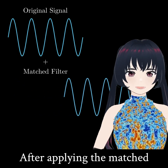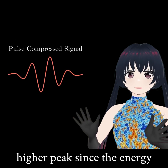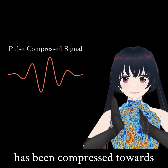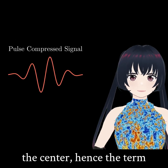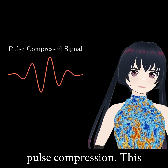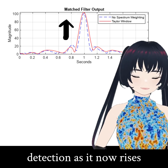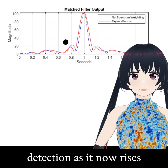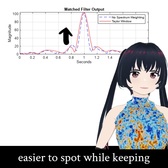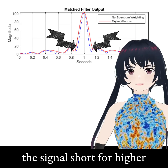After applying the matched filter, the signal has a higher peak since the energy has been compressed towards the center — hence the term pulse compression. This enhances the signal's detection as it now rises above the noise, making it easier to spot while keeping the signal short for higher resolution.